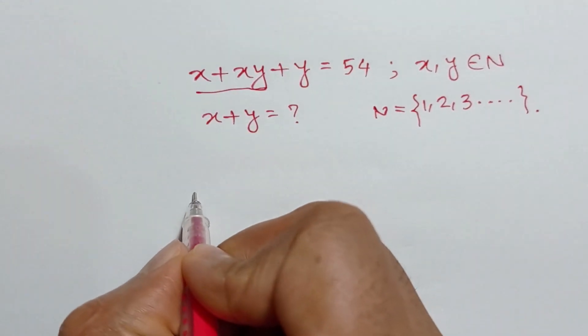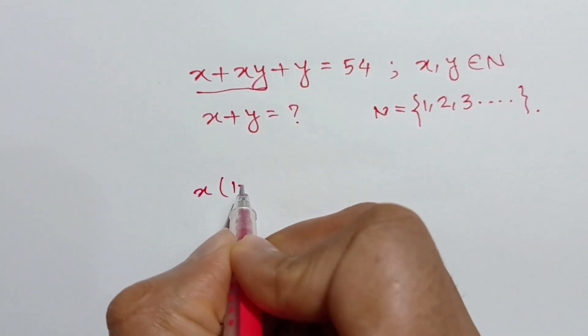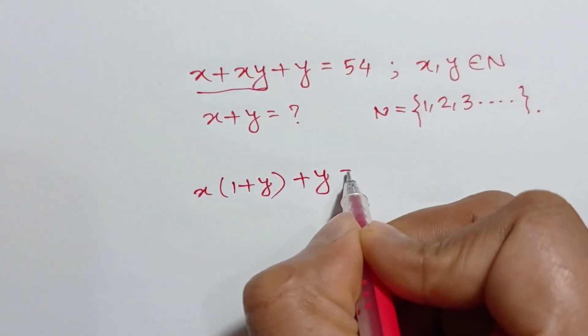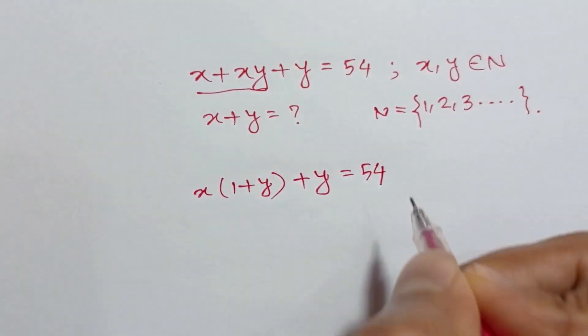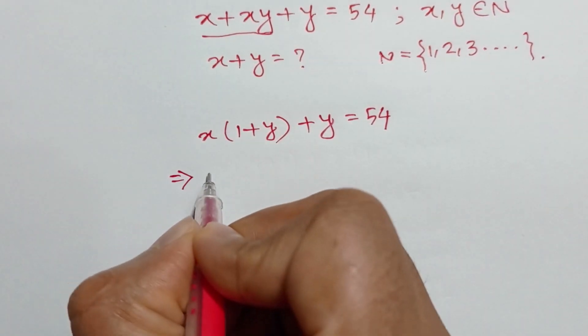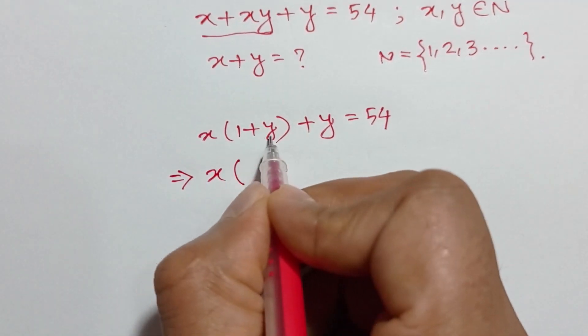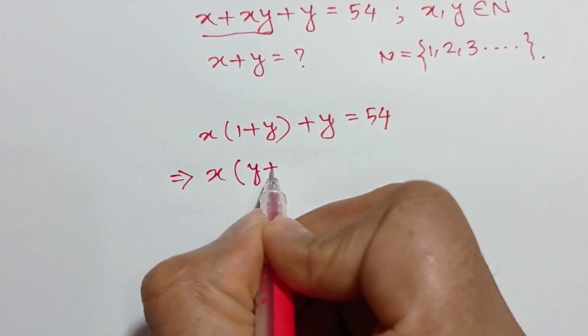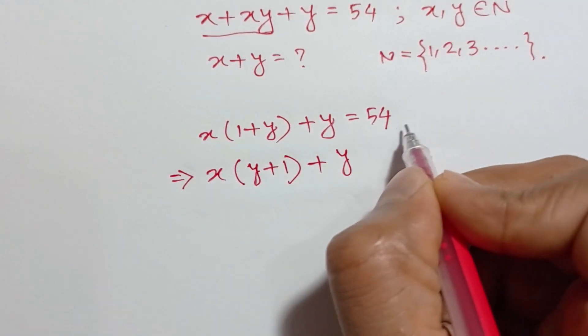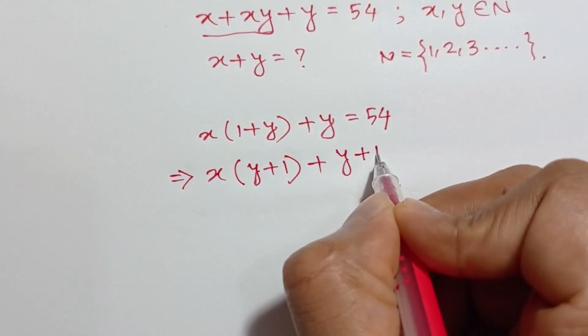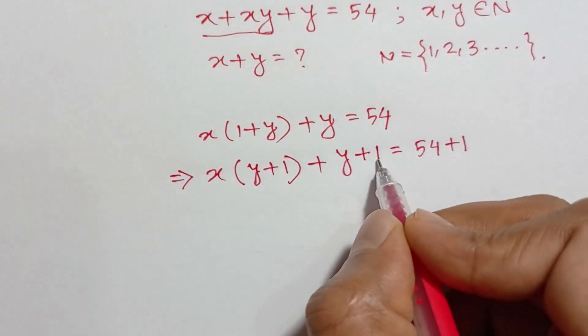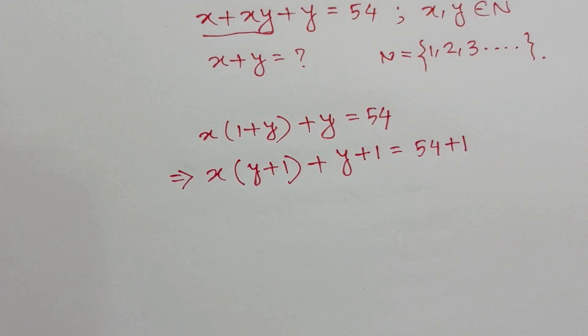From this equation, if we take common x from first two terms, we get x into 1 plus y plus y is equal to 54. Or x into, if we rearrange it, we get y plus 1 plus y. If we add 1 on both sides, we get y plus 1 is equal to 54 plus 1. These two ones cancel out from both sides.